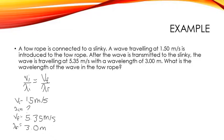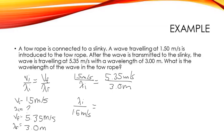Okay, so we can sub everything in. So we have 1.5 meters per second over lambda I equals 5.35 meters per second over 3.0 meters. So the easiest way to solve for this would be to flip both sides. So we have lambda I over 1.5 meters per second equals 3.0 meters over 5.35 meters per second.